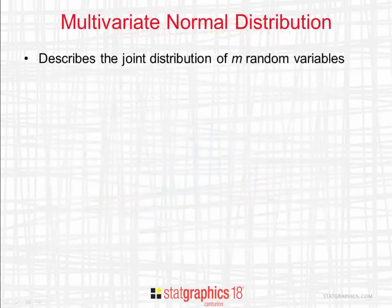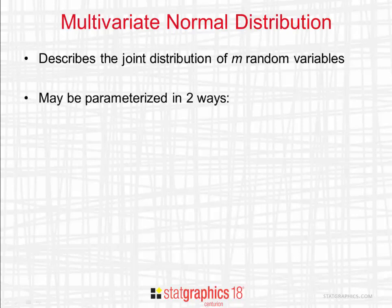In order to calculate multivariate statistical tolerance limits, we'll assume that our data come from a multivariate normal distribution. A multivariate normal distribution describes the joint distribution of m random variables. There are two different ways to parameterize a multivariate normal distribution.